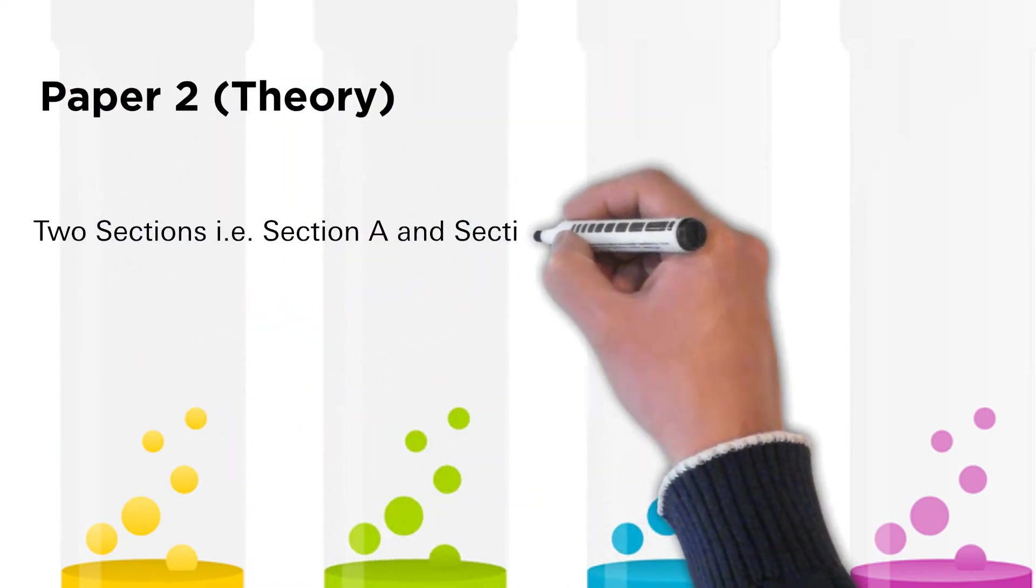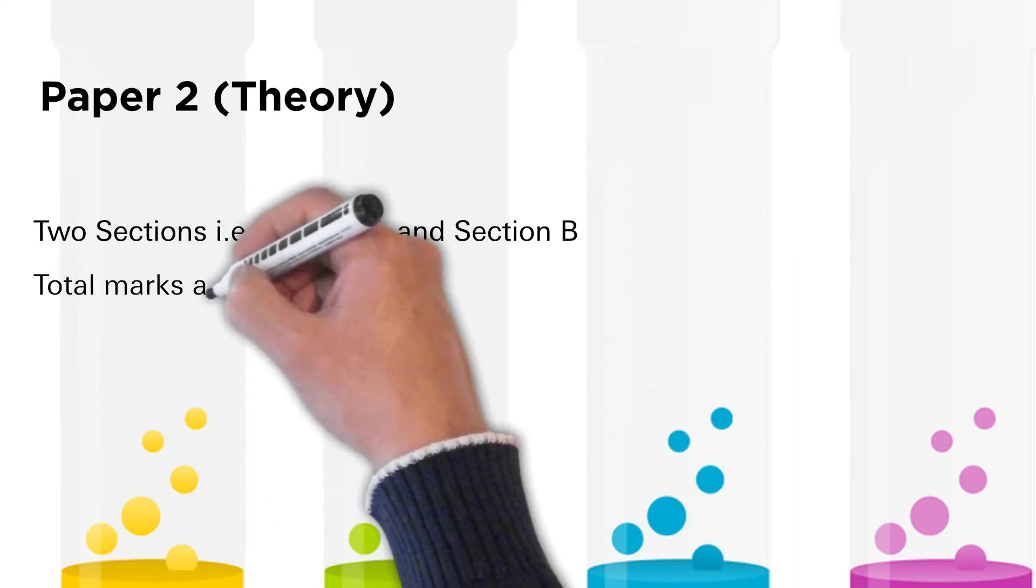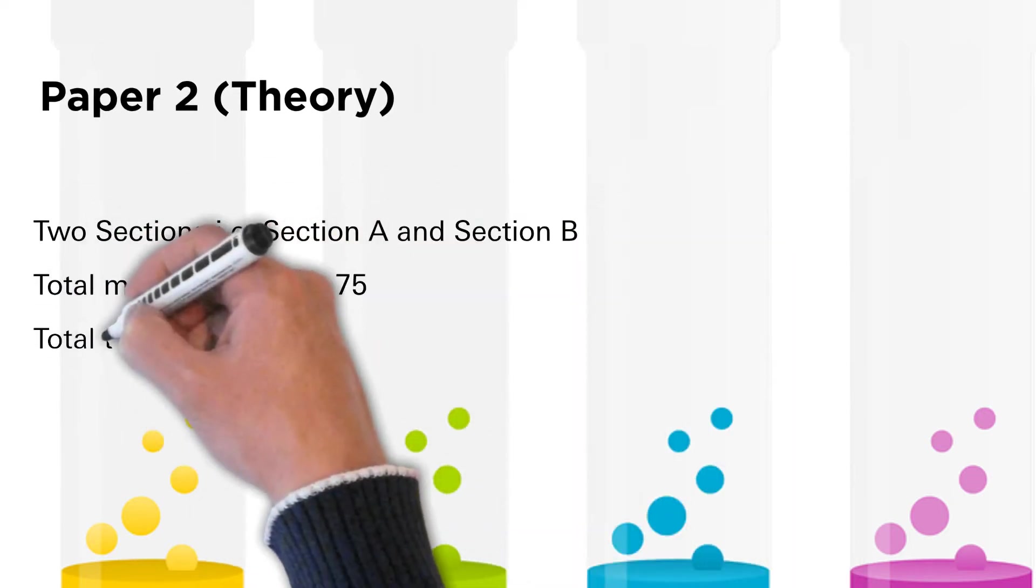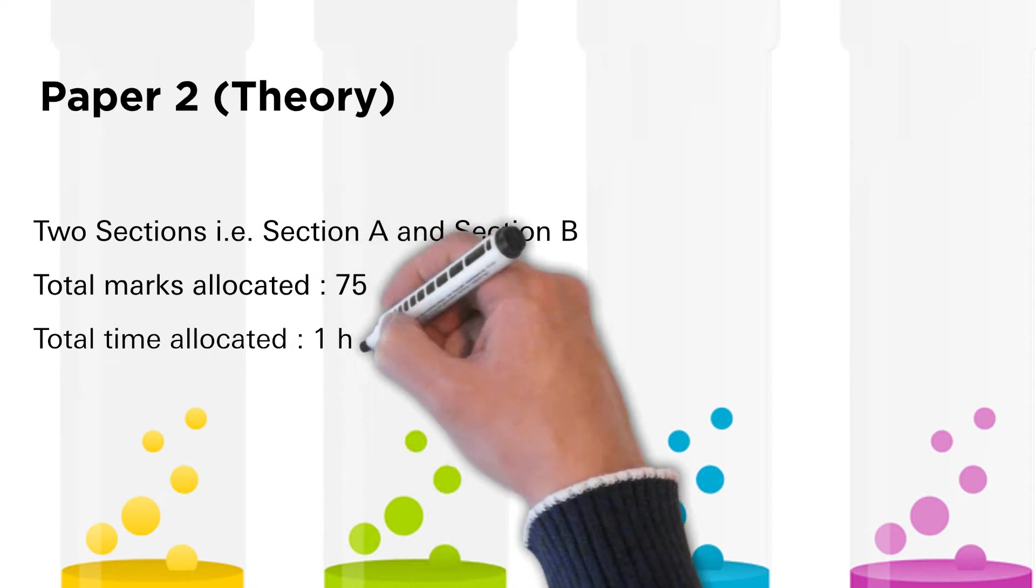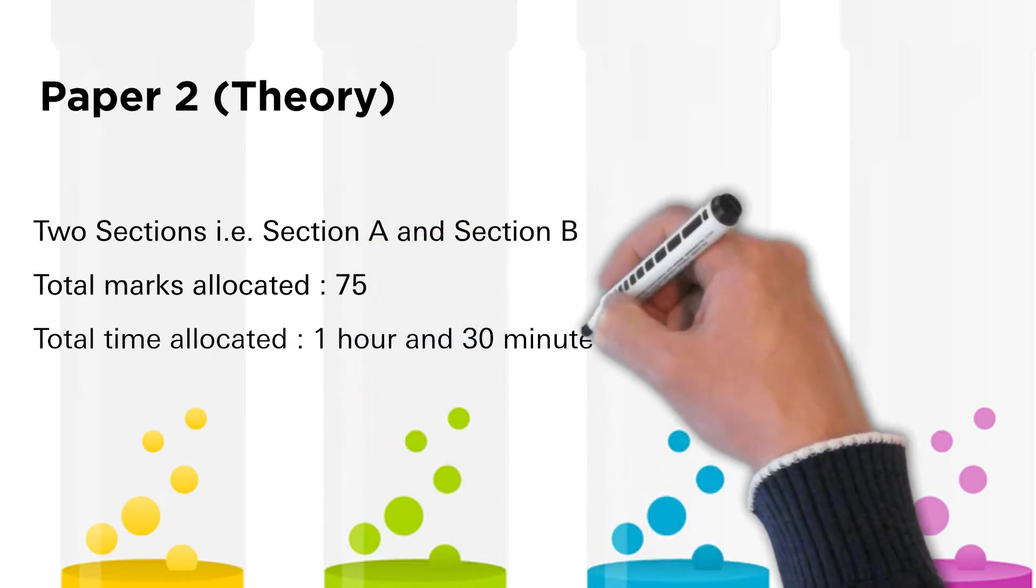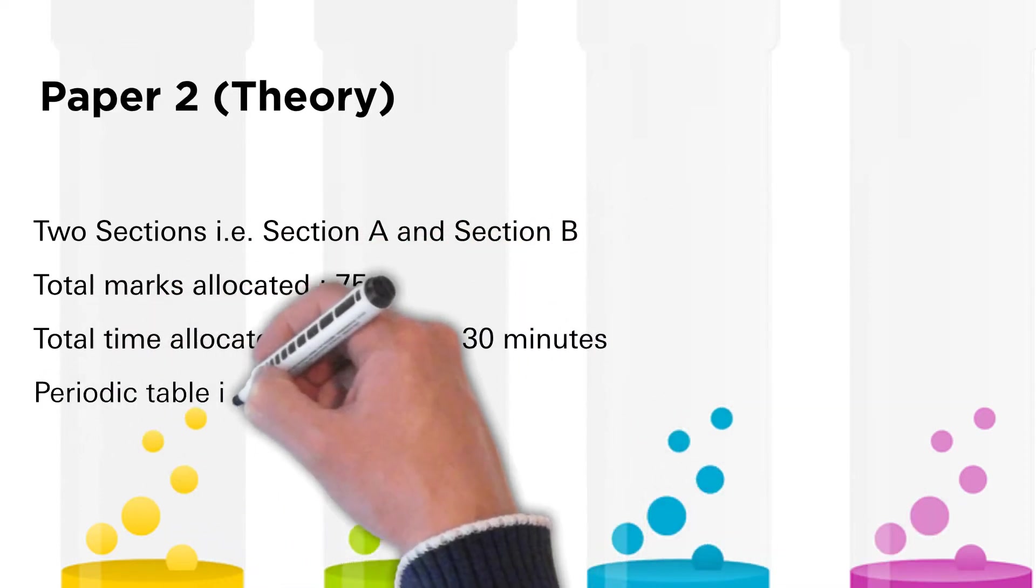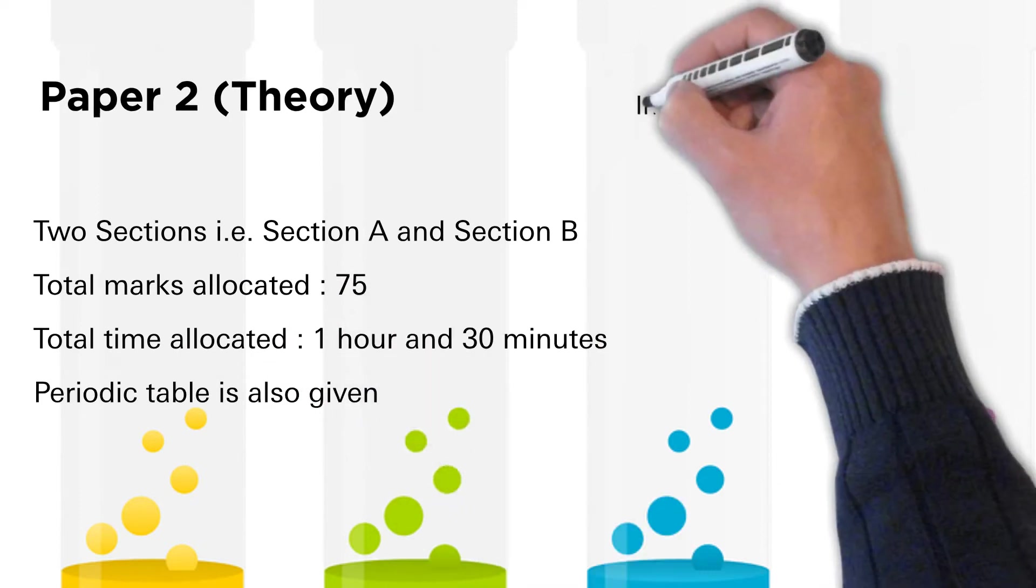Paper 2 Theory: There are two sections in this paper - Section A and Section B. Total marks allocated for this paper are 75. Total time allocated for this section is 1 hour and 30 minutes. A copy of the periodic table is also given to the students as a part of the paper.